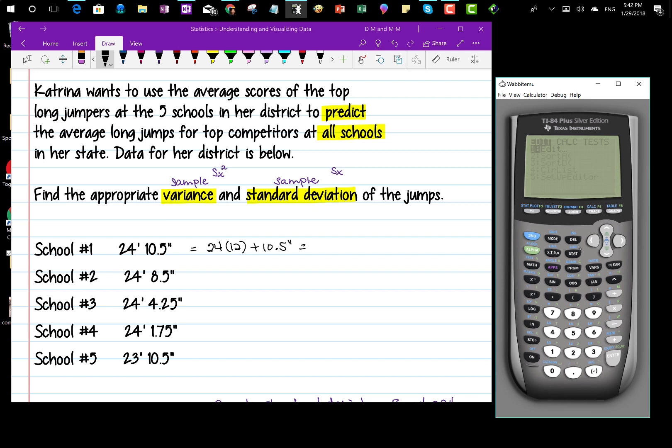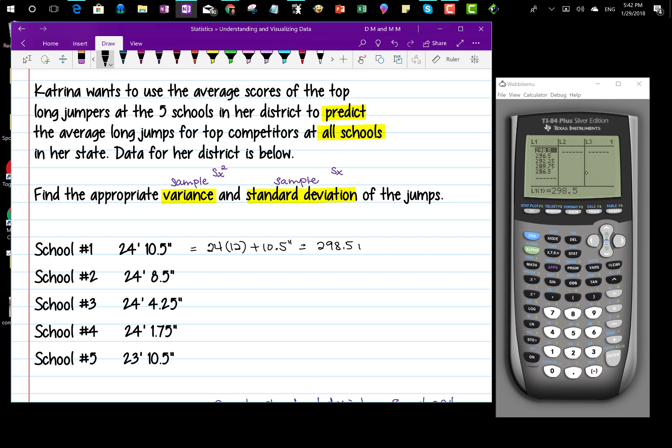When we do that, I've actually already done it and entered it into my L1 list. We get 298.5 inches for the first one, 296.5 inches for the second one, 292.25 for the third, 289.75 for the fourth, and 286.5 for the last one. Stop the video here and enter these data values into L1 in your graphing calculator.